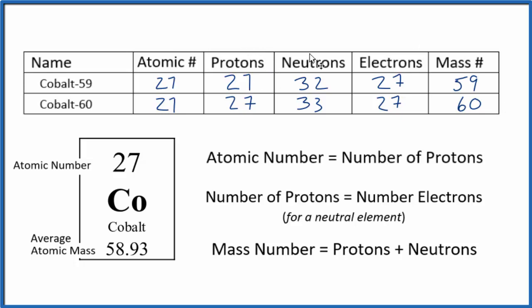That's how you find the protons, neutrons, electrons, and mass number for the different isotopes of cobalt. This is Dr. B, and thanks for watching.